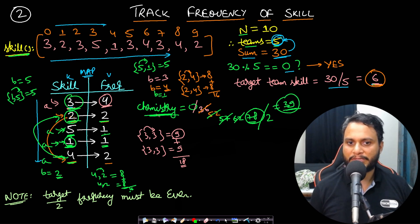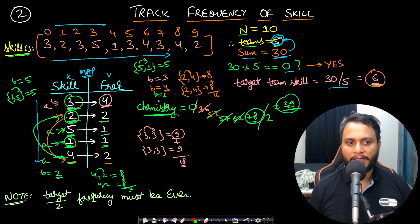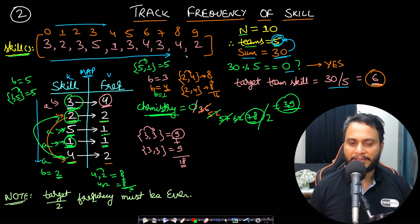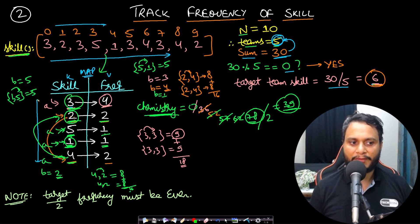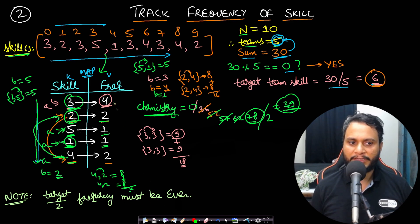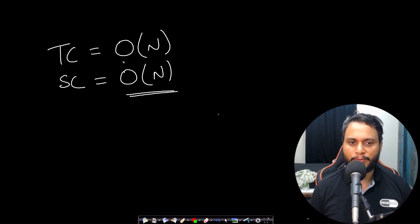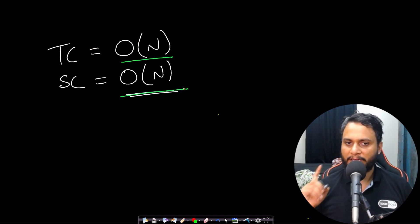The final chemistry answer is 39. For complexity: finding the sum is O(n), building the frequency map is O(n), and iterating over map entries is O(n). Space used by the map is O(n). Therefore both time and space complexity are O(n).